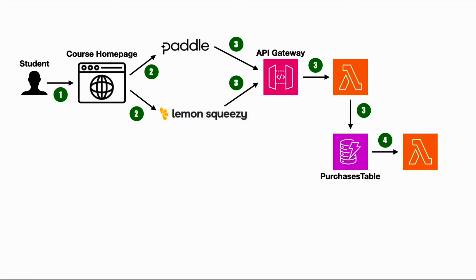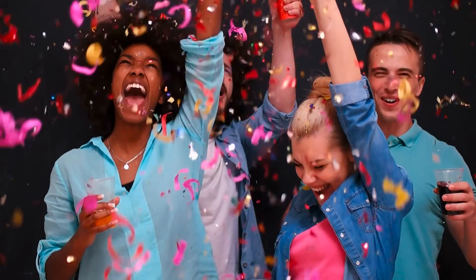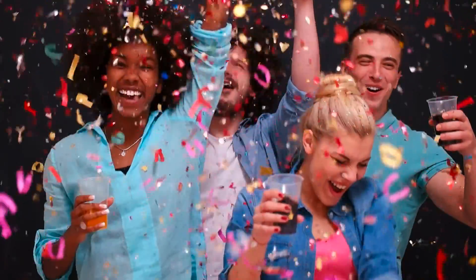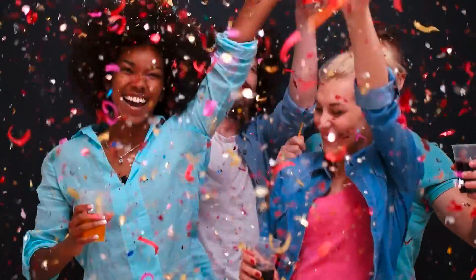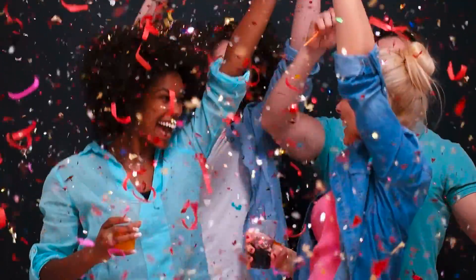From there, the DynamoDB stream on the table triggers another function which sends an email to me and to the affiliate via Simple Email Service, letting us know that the affiliate has generated a sale and earned a specific commission amount — so everybody's happy.